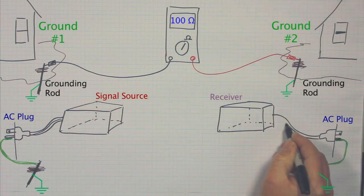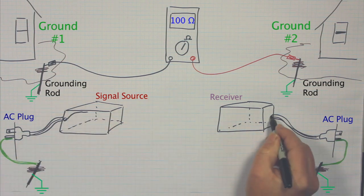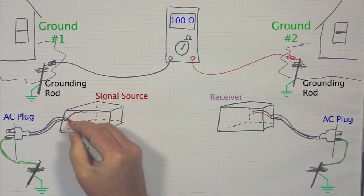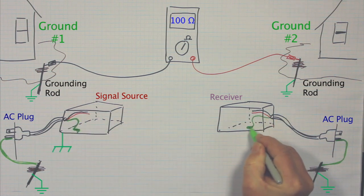If there is a difference between the grounds of two outlets, it can be measured with a voltmeter. Because they are both connected directly to earth ground, the difference should be small.